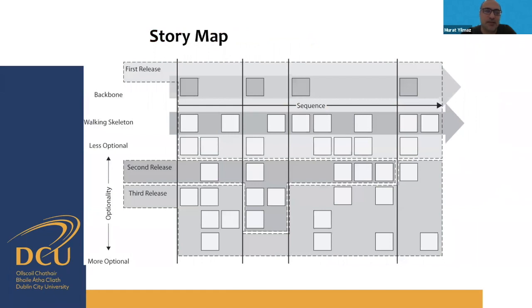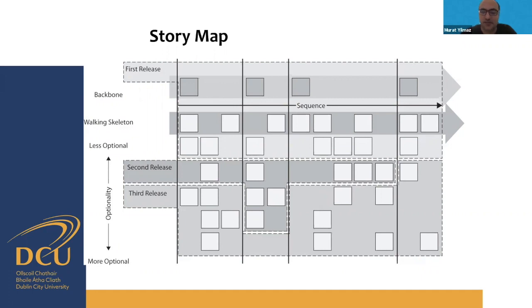Stories can be represented on a story map board showing releases, backbone sequence, and stories ordered by optionality — less optional and more optional. The second release is generally less important than the first, and so on. This is a story map. You can also use a Kanban board or Scrum board — these are fully customizable. The most important thing is that your team has a product increment ready after each sprint.